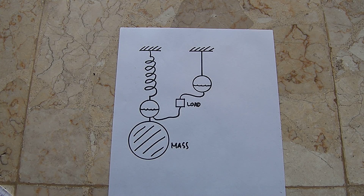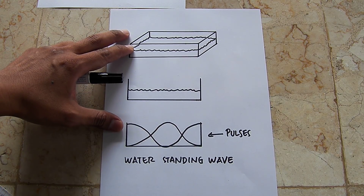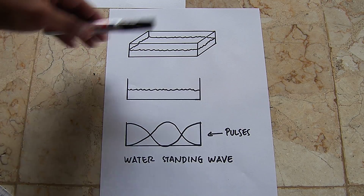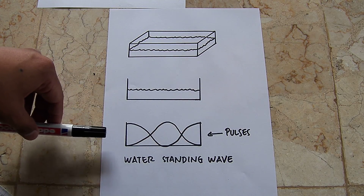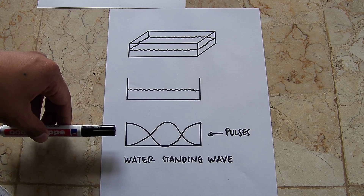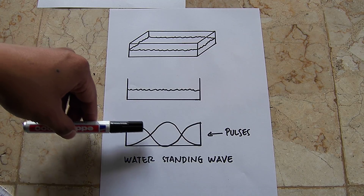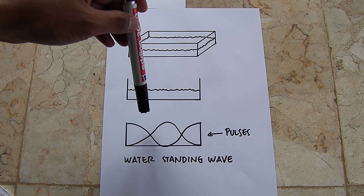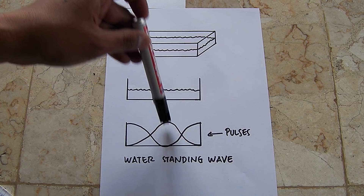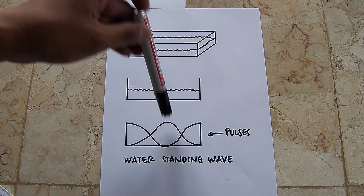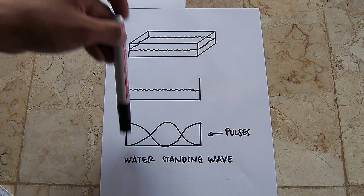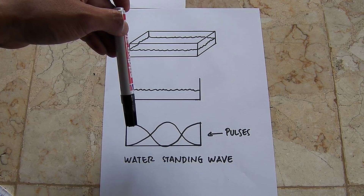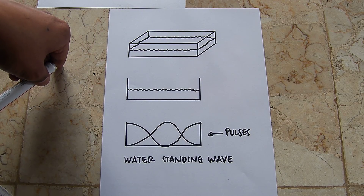Now I'm going to explain the standing wave on a resonant system with water. For example, we have a water container here, and from the side it looks like this. If you give a pulse to the water at the right time, you can get this kind of effect — for example, in the center the water will go up and down to the maximum position, and also on each side it will go up and down to the maximum position. This is the analogy of a standing wave using water.